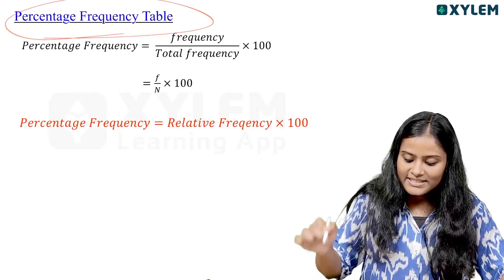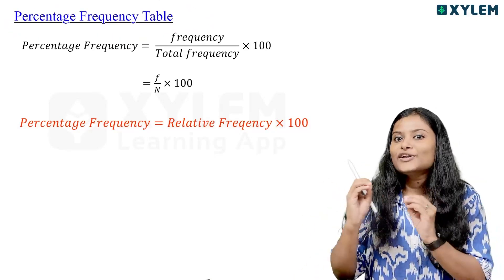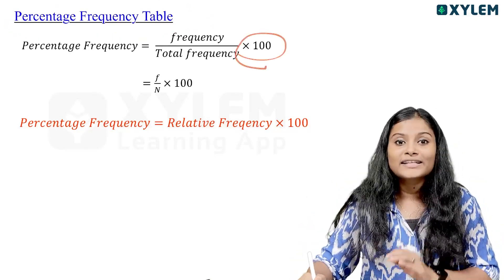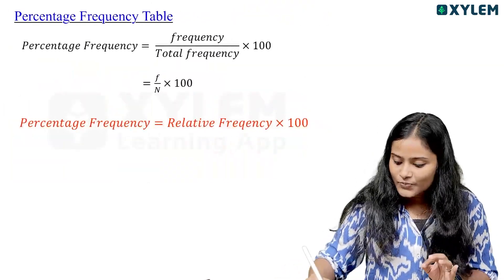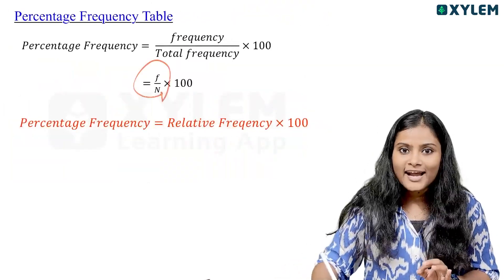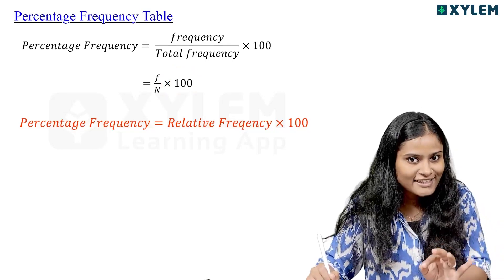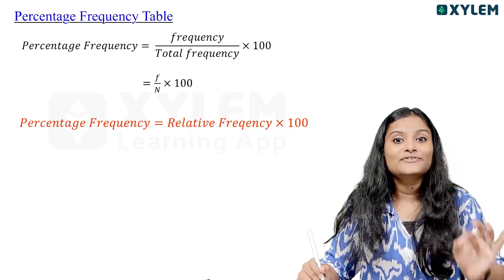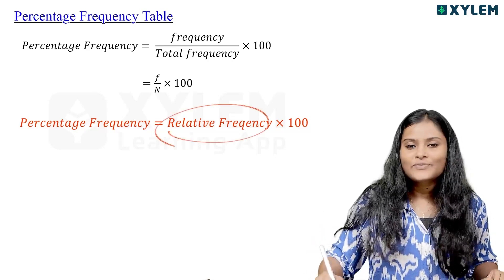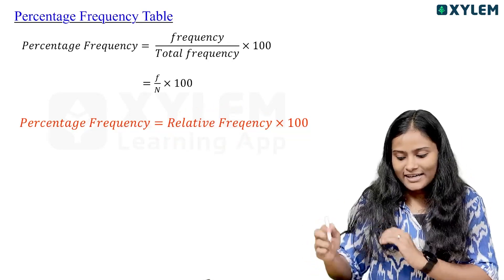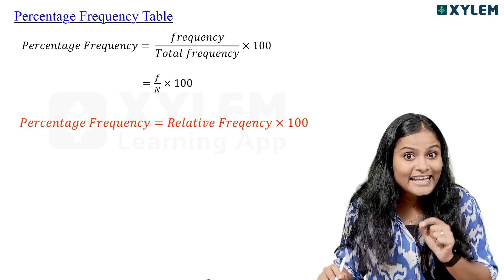This is the percentage frequency table. If we multiply by 100, what is the relative frequency? It is f divided by n. That is the percentage frequency table, which is related to 100. We call it the percentage frequency, also known as relative frequency multiplied by 100.